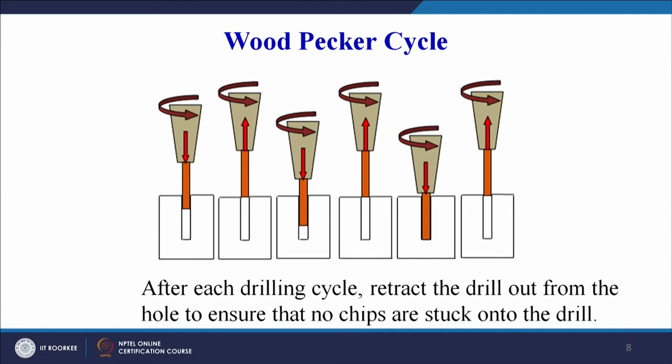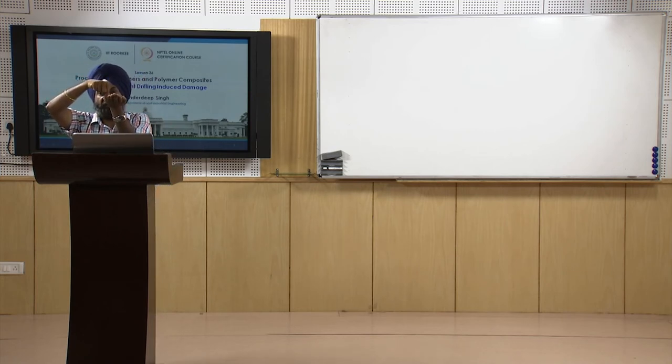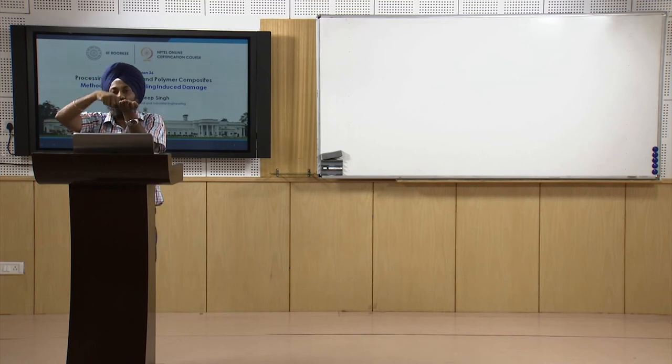Some may wonder how this process can be better than conventional drilling, where the drill moves continuously down and completes the hole in one go. In conventional drilling the time taken is less compared to the woodpecker cycle because it is a single-pass process, whereas here we go three times to make a hole of equivalent depth. That is a valid question — how is this process better than conventional drilling?